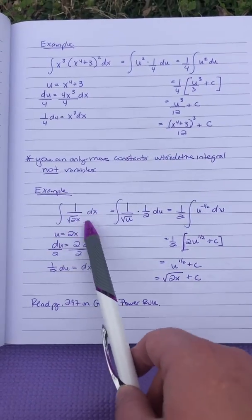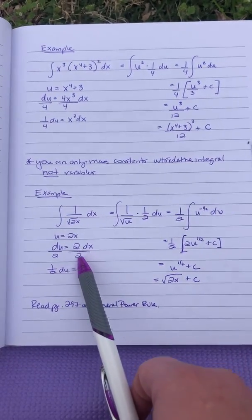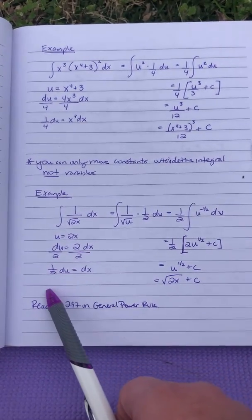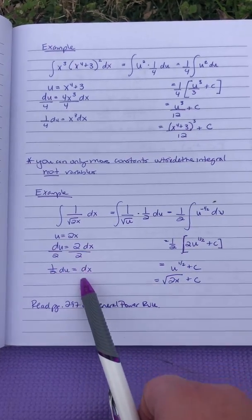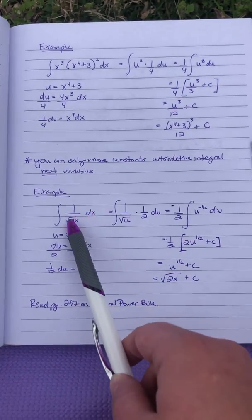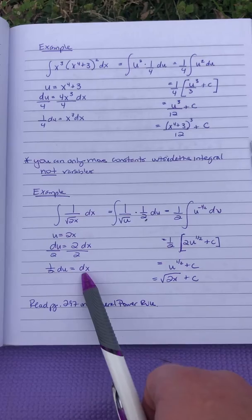So there's no 2 up here in this problem. It's just 1 dx. So we're going to divide by 2 on both sides. So you get one half du equals just dx. So 1 dx is the same thing as dx.